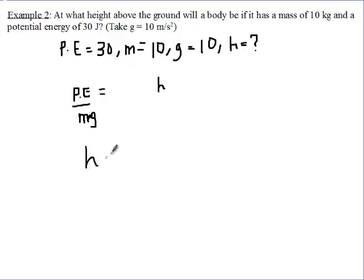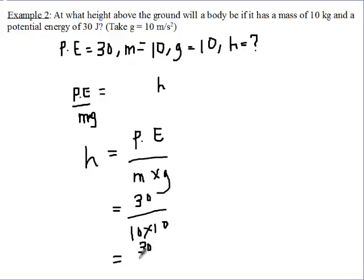So we can change these and put their values in there. Potential energy is equal to 30, mass is equal to 10, and then gravity is also equal to 10. So we are going to have 30 divided by 100, and that is going to give us 0.3. And since it is height, its units will be meters.